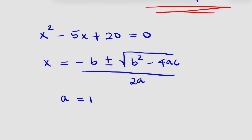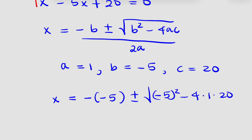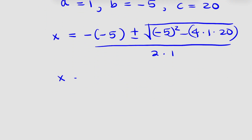Here, a is 1 (the coefficient of x squared), b is negative 5, and c is 20. Substituting into the formula: x equals minus(minus 5) plus or minus the square root of (minus 5) squared minus 4 times 1 times 20, over 2 times 1. So x equals 5 plus or minus the square root of 25 minus 80.